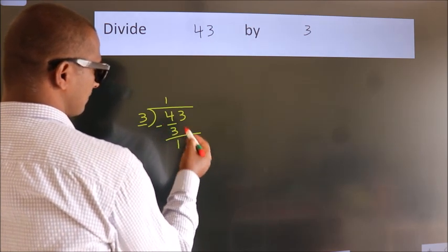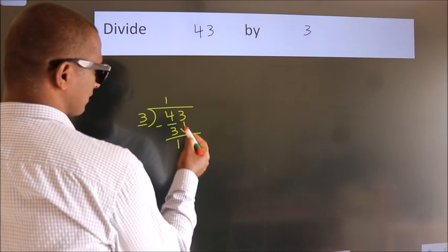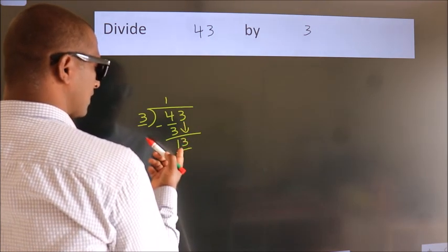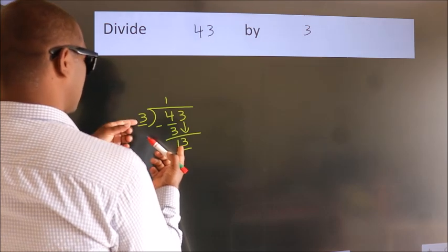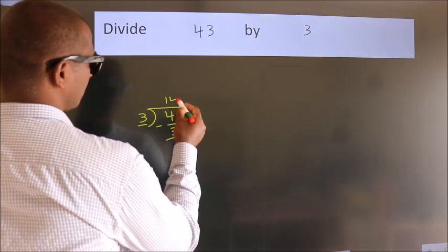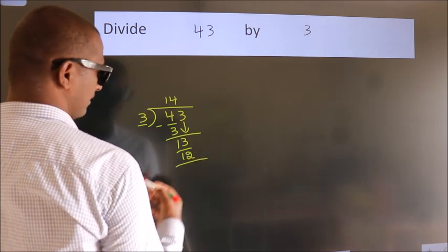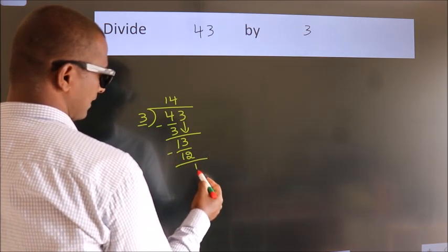After this, bring down the beside number. So, 3 down. So, 13. A number close to 13 in the 3 table is 3 fours, which is 12. Now we subtract. We get 1.